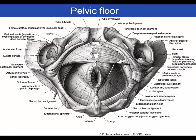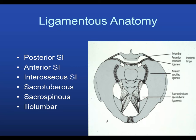The pelvic floor can be disrupted especially with APC or vertical shear type injuries. Looking at a more schematic view, you can see the relatively weak anterior SI ligaments, the strong posterior SI ligaments, the pelvic floor, and the symphysis. There's also the iliolumbar ligament — an avulsion of the transverse process here is called a sentinel sign, indicating the pelvis experienced dynamic instability or vertical migration at the time of impact.